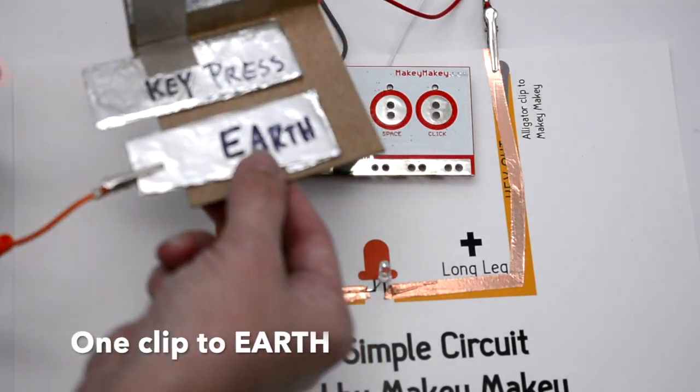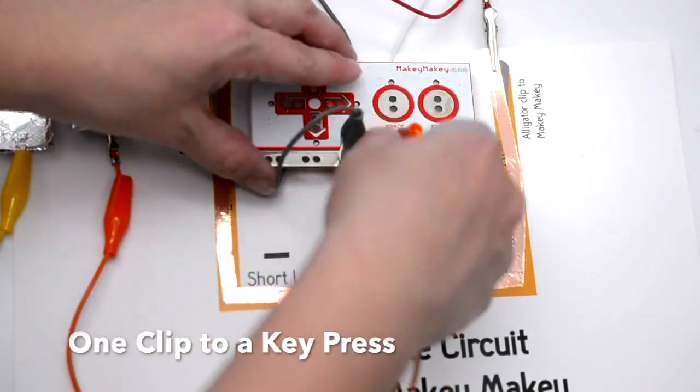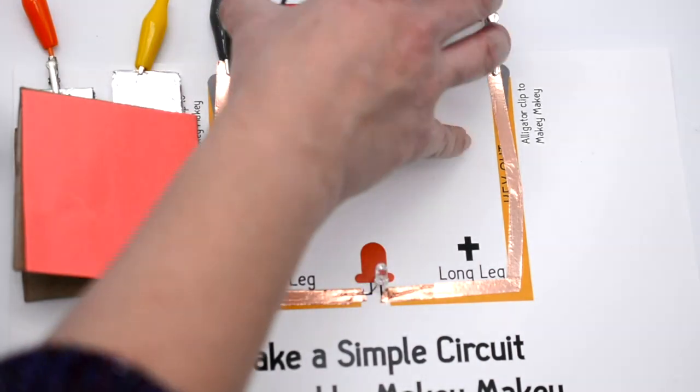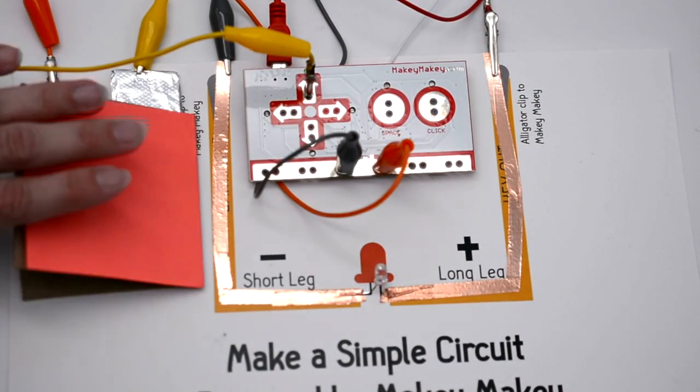You can take a switch that you've made and put one clip to earth and one clip to a key press. And then again, wire to earth and any of the key presses for this activity, I put it to up. And now when you press on the switch, voila, you have light.